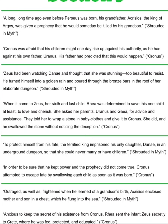That was in the first passage. And then when it came to Zeus, her sixth and last child, Rhea was determined to save this one child at least, to love and cherish. She asked her parents Uranus and Gaia for advice and assistance. They told her to wrap a stone in baby clothes and give it to Cronus. She did, and he swallowed the stone without noticing the deception. So you're going to put in here...